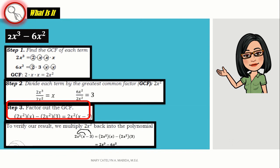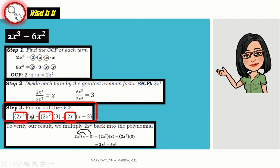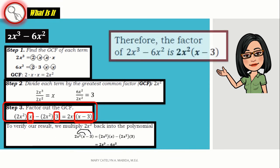Let's go to step 3. Factor out the GCF. Again, GCF is 2x squared and we combine what's left, it becomes x minus 3. That's it. Therefore, the factor of 2x cubed minus 6x squared is 2x squared times the quantity of x minus 3.